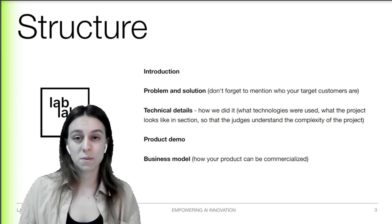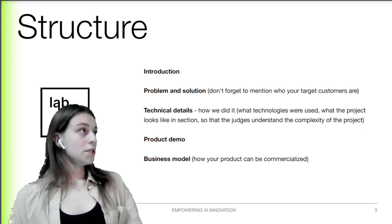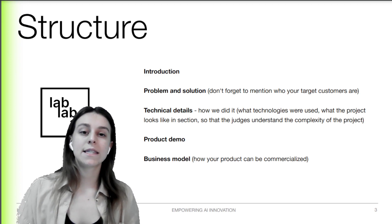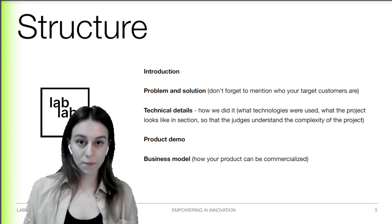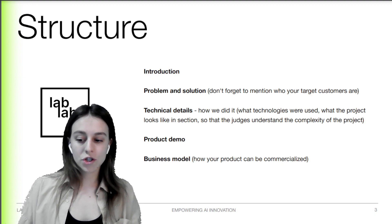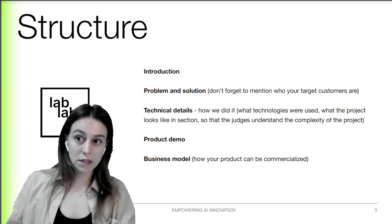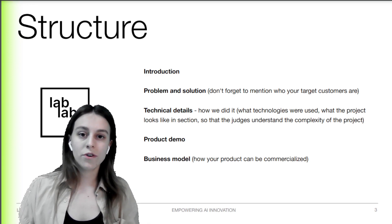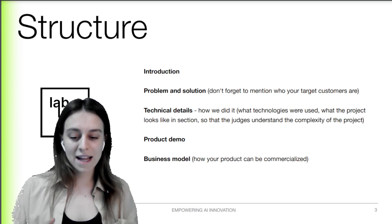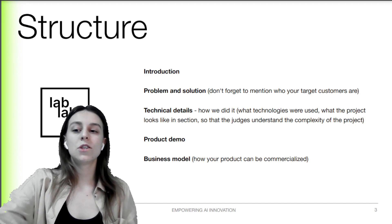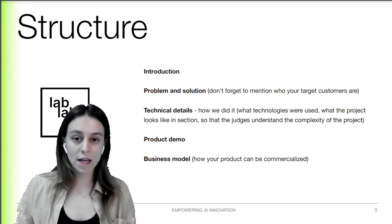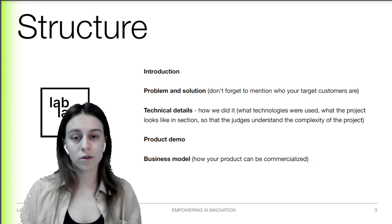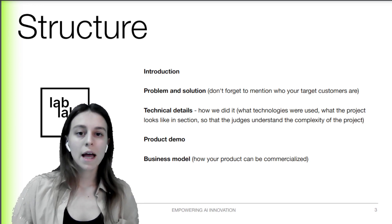The third point is technical details. This is extremely important for our technical mentors — they need to know how complex your project is. If we have two solutions, we'll choose the one with the more complex project that uses more tools and more integrations between them. It's always very valuable to see how passionate people can be with AI. Create a simple structure showing how your project works and list all the tools you used — it's basically a project architecture overview.